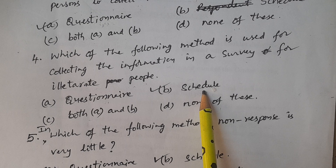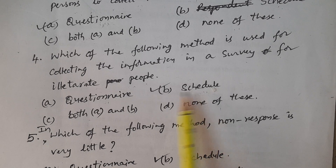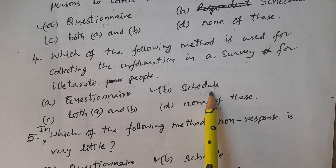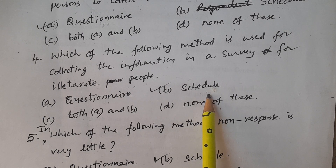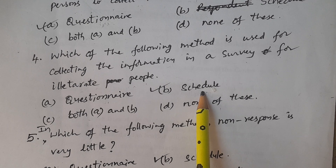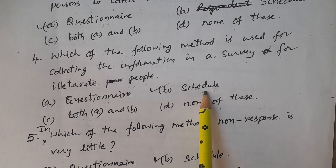We already discussed that the schedule is filled by the investigator. So for illiterate people, the investigator can ask questions one by one and fill up the answers. Therefore, the schedule method of collecting information is useful for illiterate people.